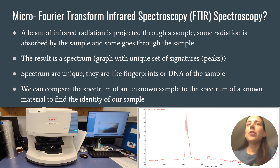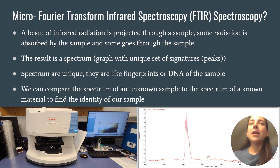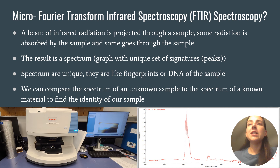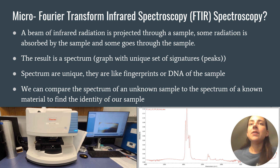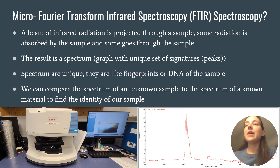So what is micro FTIR spectroscopy? It's when a beam of infrared radiation is projected through a sample. Some of that radiation is absorbed by the sample and some goes through the sample. The result is a spectrum, or a graph, with a unique set of signatures or peaks. The spectra are unique — they're like fingerprints or DNA of the sample. So we can compare the spectrum of an unknown sample to the spectrum of a known material to find the identity of our sample.